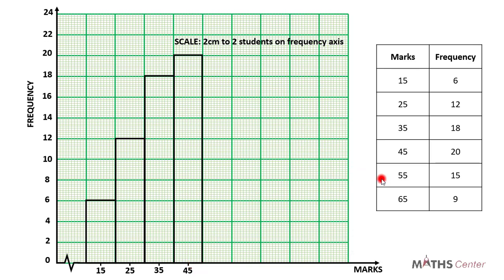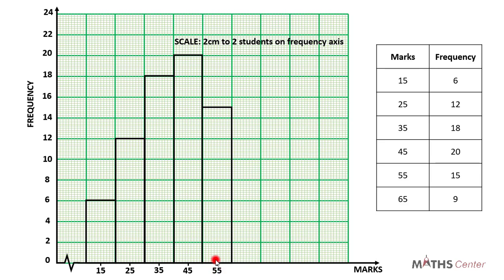The next one is 55. The frequency is 15. So we have the bar for 55 with height at 15. Note that 15 is between 14 and 16 on the frequency axis. The mark which is 55 will be at the center of the bar, on the 5th division, since the bar occupies 10 minor divisions.